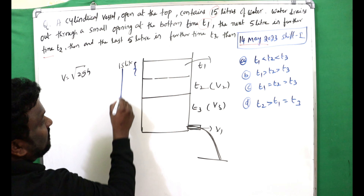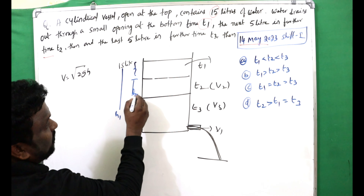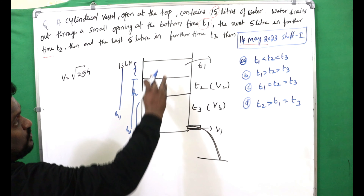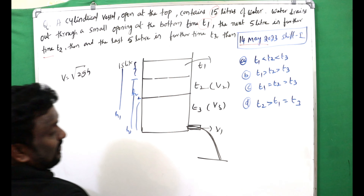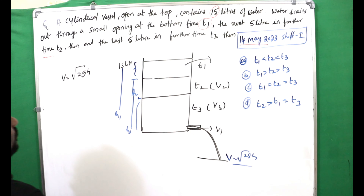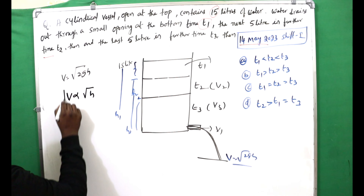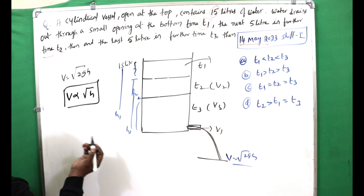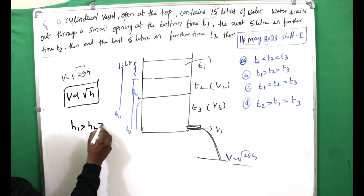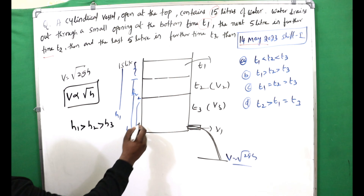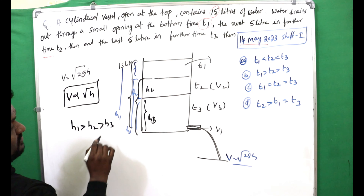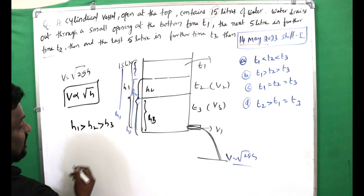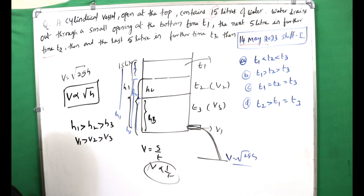The first 5 liters of water occupy height h1, the next 5 liters occupy height h2, and the last 5 liters occupy height h3. Since v = √(2gh), velocity is proportional to √h. Since h1 > h2 > h3, we get v1 > v2 > v3.